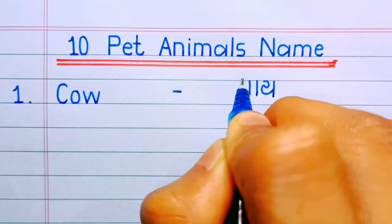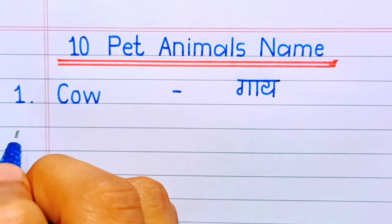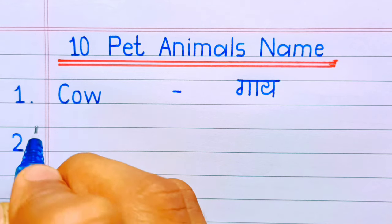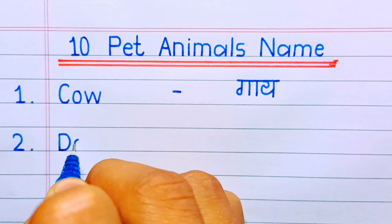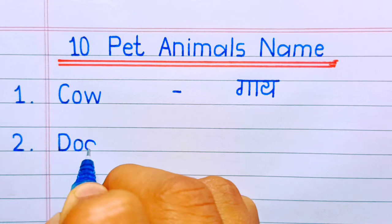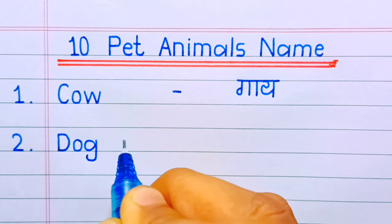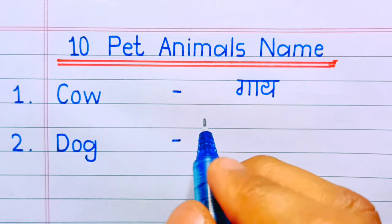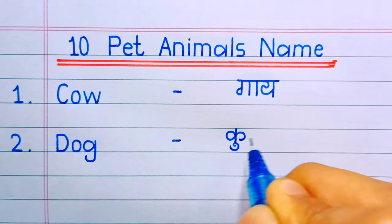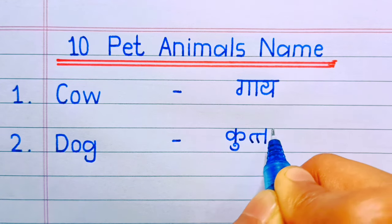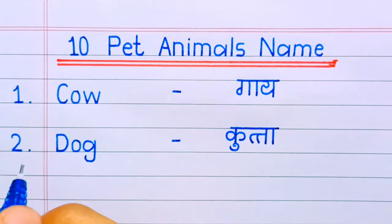Cow means gai. Number two: dog. Dog means kutta.